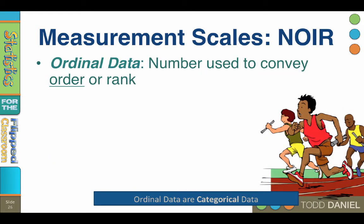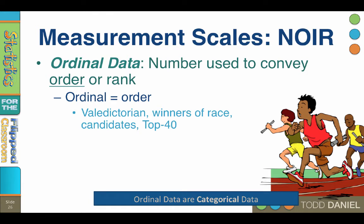Ordinal data are numbers used to convey order or rank. The word ordinal means order, and examples of ordinal data would be valedictorian status in class ranking, order of winners in a race, the finishing order of political candidates, most popular songs on top 40 radio, or Mohs scale of mineral hardness. In Mohs scale, harder minerals scratch softer ones, but it is not a measure of actual hardness.